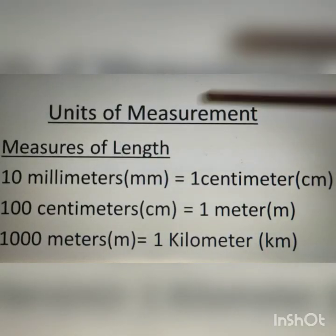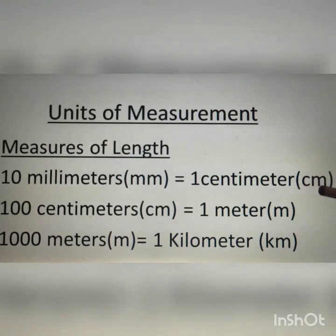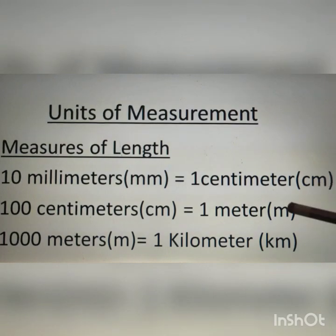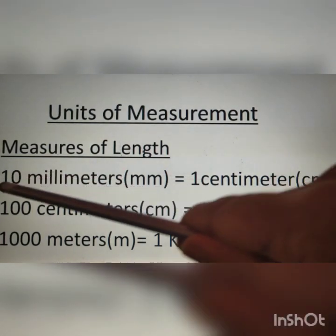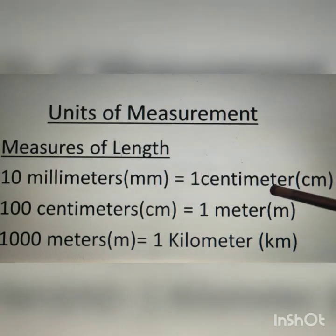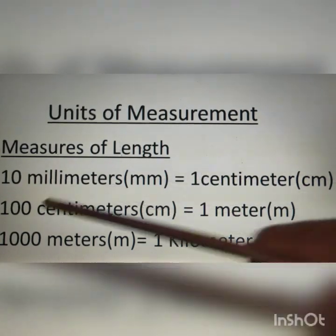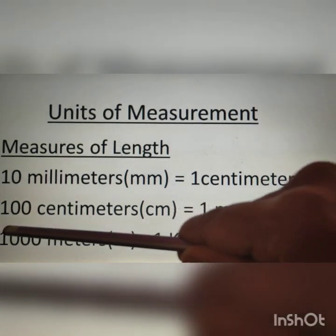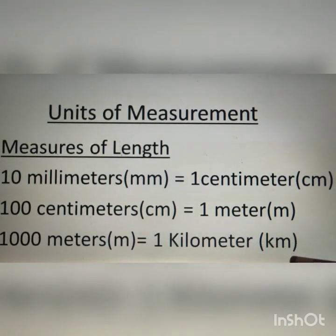The different units of length are: millimeter, centimeter, meter, and kilometer. 10 millimeters is equal to 1 centimeter. 100 centimeters is equal to 1 meter. 1000 meters is equal to 1 kilometer. Please remember this.